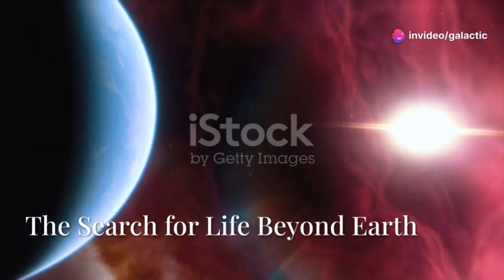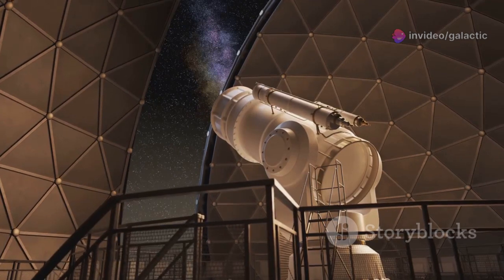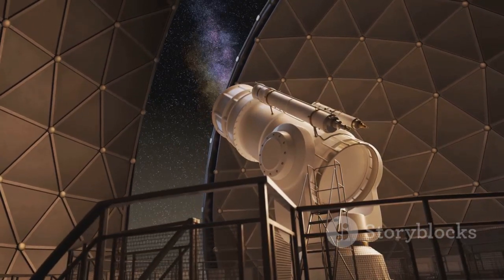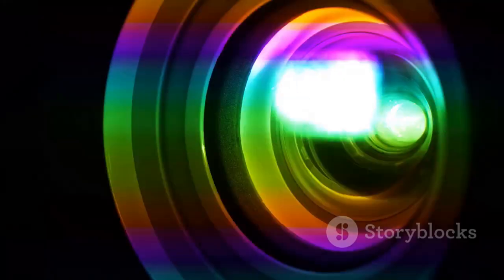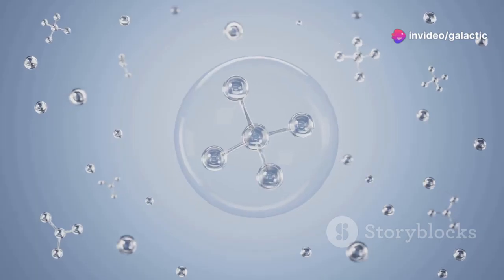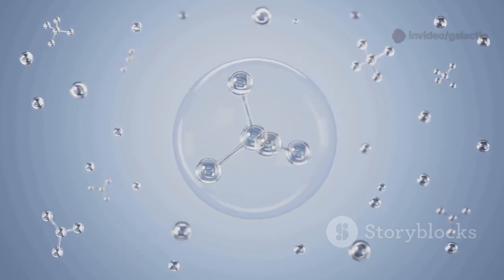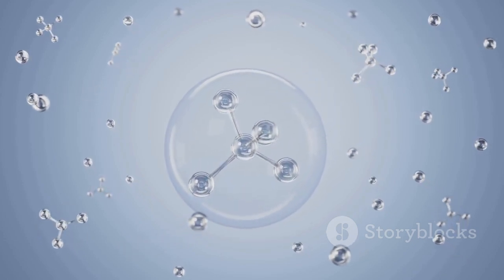Finding exoplanets is cool and all, but here's where things get really interesting. JWST doesn't just spot these distant worlds, it can actually analyze their atmospheres. By studying the light that passes through an exoplanet's atmosphere, JWST can identify the chemicals present. And guess what they're finding? Water vapor, carbon dioxide, and even methane molecules that are essential for life as we know it.